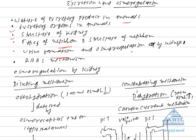And osmoregulation, and finally the RAS mechanism, that is renin-angiotensin-aldosterone system. The most complicated aspect is osmoregulation, which I am going to discuss: osmoregulation by kidney.